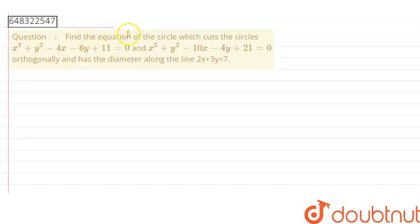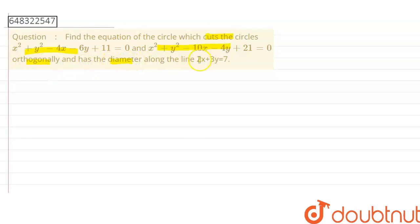Find the equation of the circle which cuts these two given circles orthogonally and has the diameter along the line 2x plus 3y equals to 7. Consider two circles here.